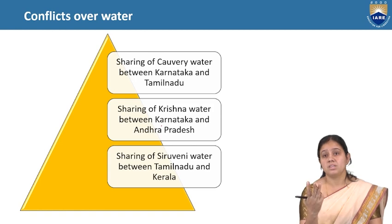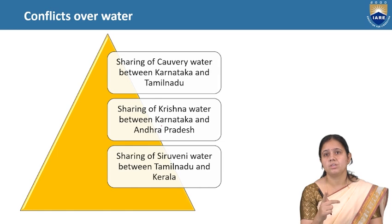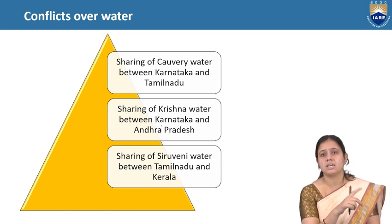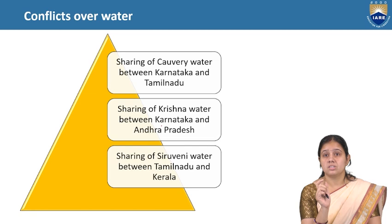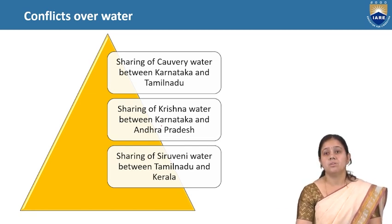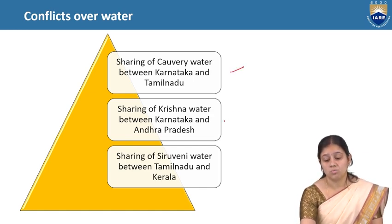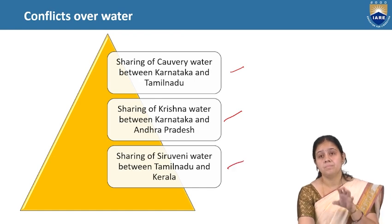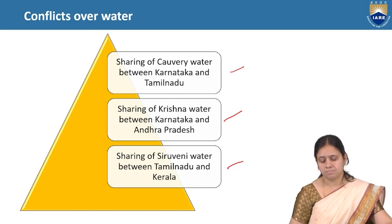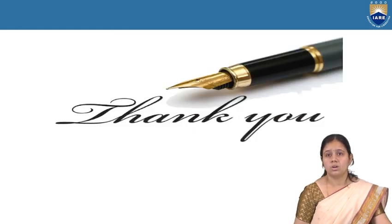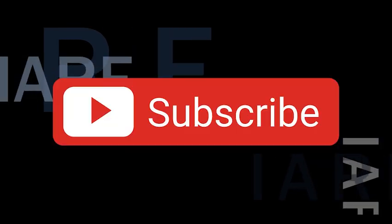There are three important water conflicts in India: sharing of Kaveri water between Karnataka and Tamil Nadu, sharing of Krishna water between Karnataka and Andhra Pradesh, and sharing of Siruvani water between Tamil Nadu and Kerala. These are conflicts related to the sharing of water between states. That's all for this discussion — thank you, like, share and subscribe, and hit the bell icon for more updates.